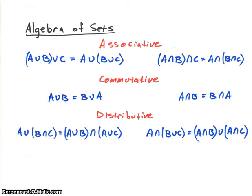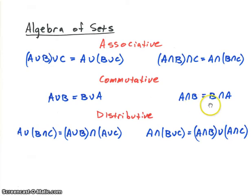The commutative property means that we can swap the order without affecting the result. So A union B is the same as B union A, and A intersect B is the same as B intersect A. Many operators have this property — for instance, addition: one plus two is the same as two plus one.